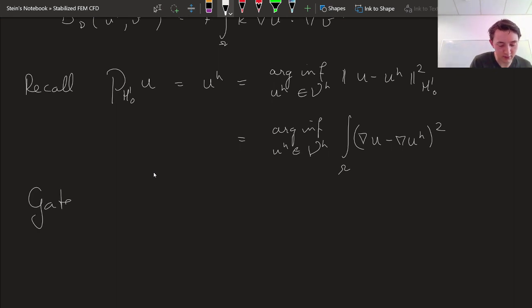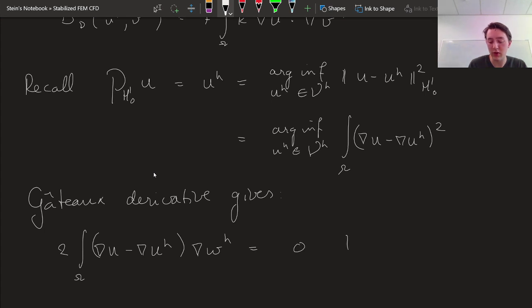So we'll take the Gato derivative. You can try this yourself if you need more detail, but I'll jump straight to the punch line. And you get 2 times the integral of the gradient of U minus the gradient of UH times the gradient of some other function, some test function WH. And that is going to be equal to 0 for all WH in our core skills space.